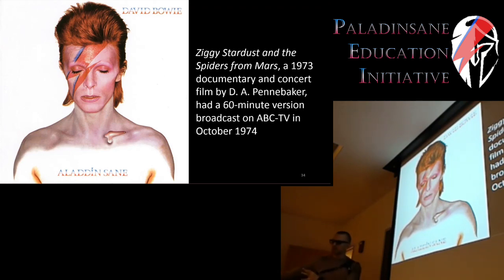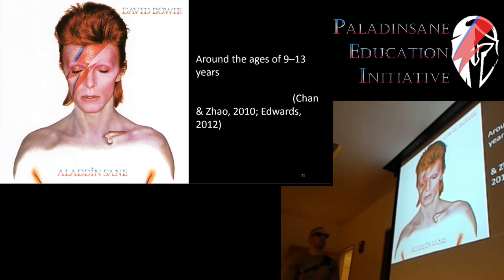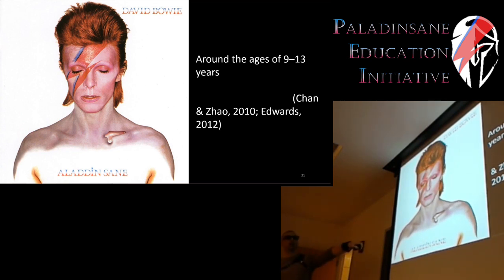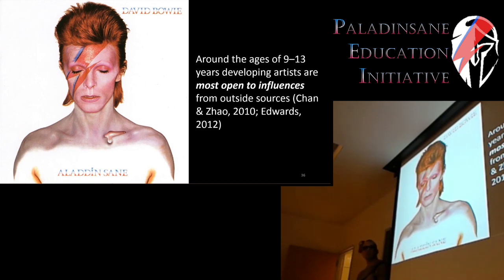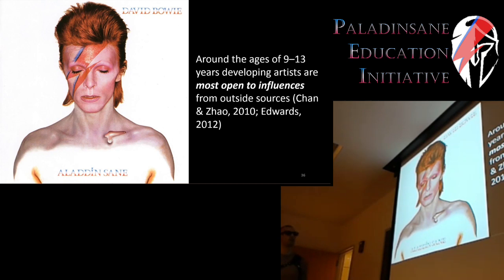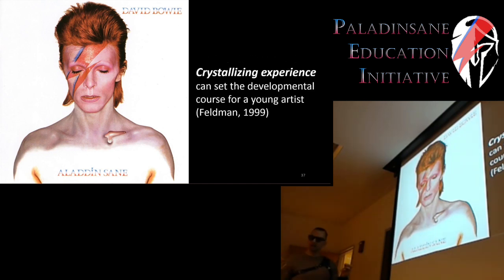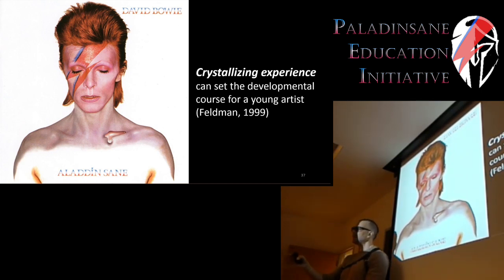So Bowie definitely had impact. What about artistic development? Around the ages of nine to 13, developing artists are most open to influences from outside sources. This is a critical period where they are very open and susceptible to outside influences that can set their trajectory for the rest of their artistic development. You can have what they call a 'crystallizing experience' that sets the developmental course for an artist — something experienced between ages nine and 13 can set your creative path for the rest of your creative life.